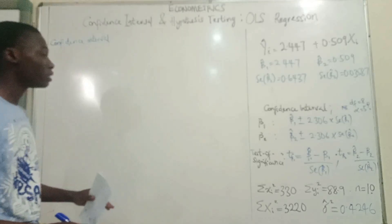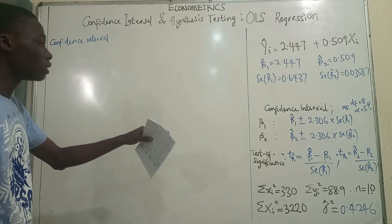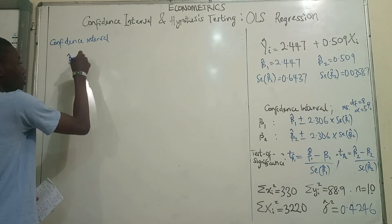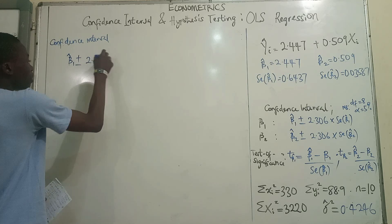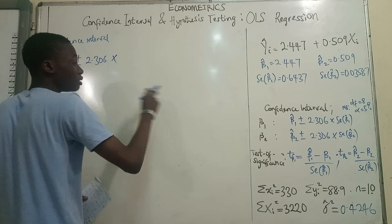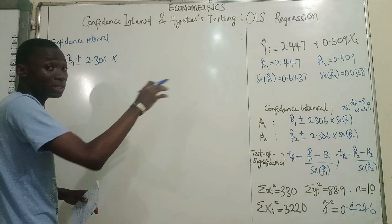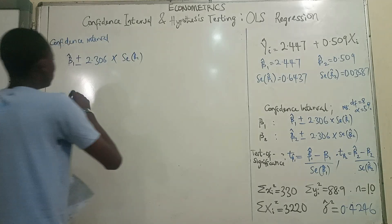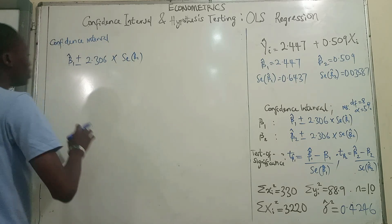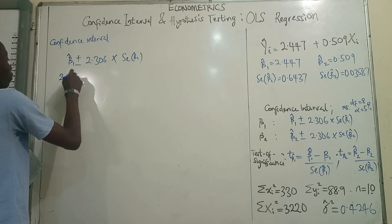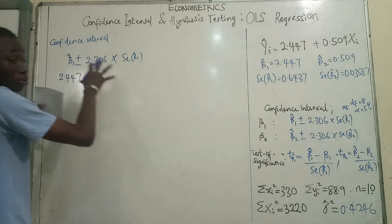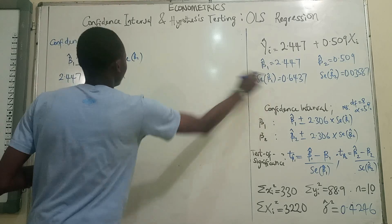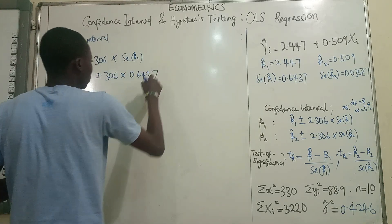So calculating the confidence interval for beta 1, we have the values for the cutoff. The cutoff values for beta 1 as the estimated beta 1 plus or minus this times the standard error for beta 1, which is 2.447. So we're trying to get the cutoff values now, plus or minus this times the standard error which we've estimated using the formula for the standard error.